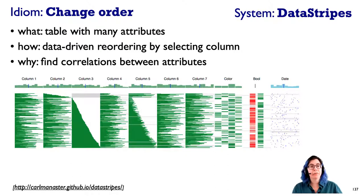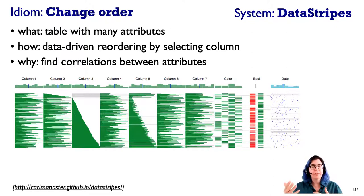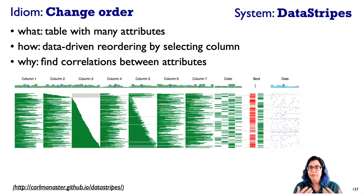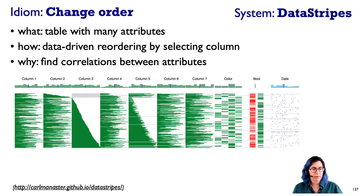Let's go beyond a single bar chart. What if we have this data stripes interface, which is reminiscent of an earlier effort called Table Lens? It allows us to have multi-attribute tables — think of this a lot like a spreadsheet — where you can pick a column, reorder according to the data value of that column, and then see whether other attributes appear to be visually correlated with that. It's a great way to very quickly and interactively explore a data set. I encourage people to click through and check out the interactive demos, which are linked in the URL in the lower left corner.